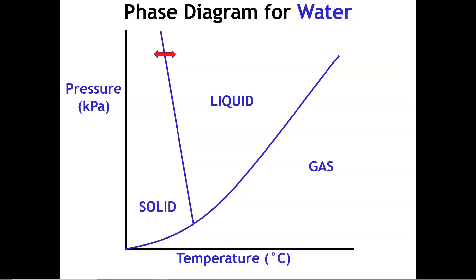Some other parts that are important are the different lines. For example, this line separates solid and liquid. This is the melting and freezing line. This line over here separates the liquid and gas, so this is the boiling slash condensing line. And then this line right here is separating the solid from the gas, so this will be the sublimation and deposition line.